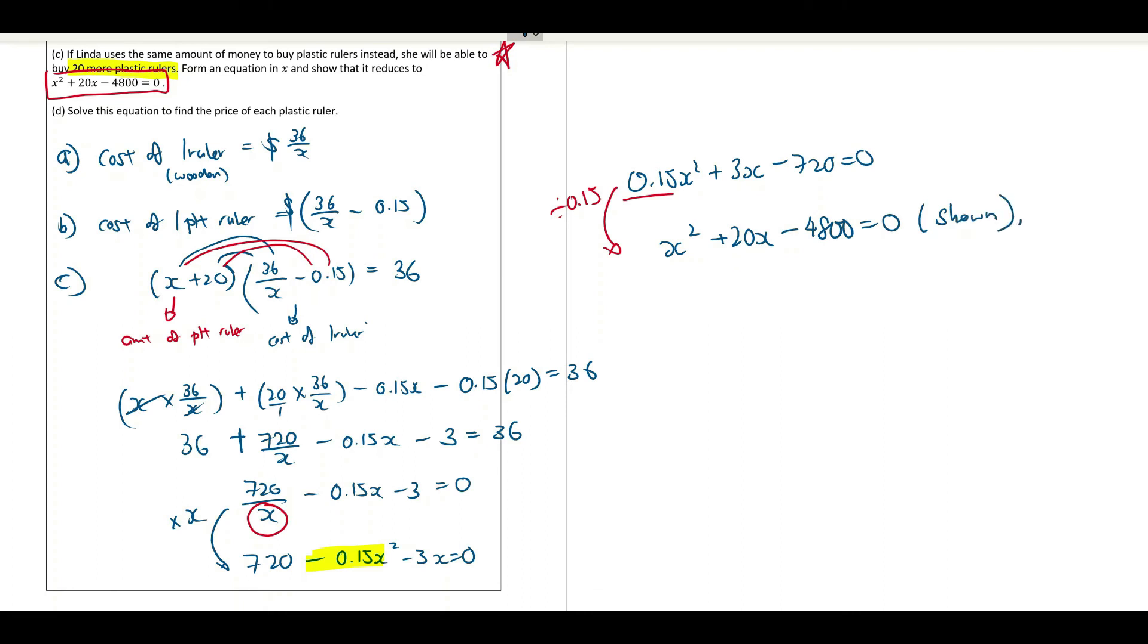Next, D. Let's just use this to do the cross factorization or you can just use your mode 3 to do it. X square plus 20X minus 4,800 equals to 0. Then you use your calculator.